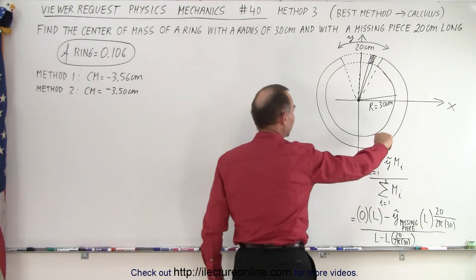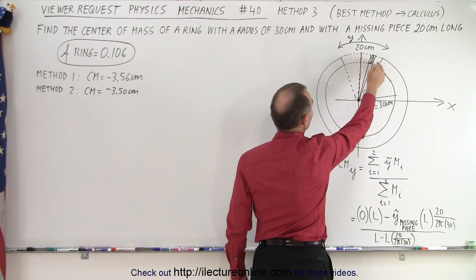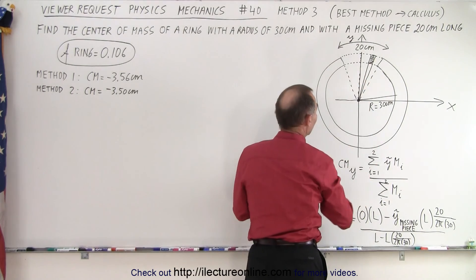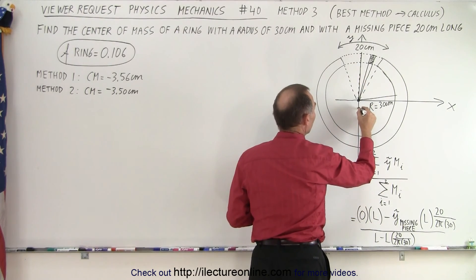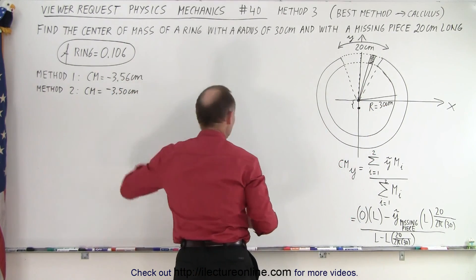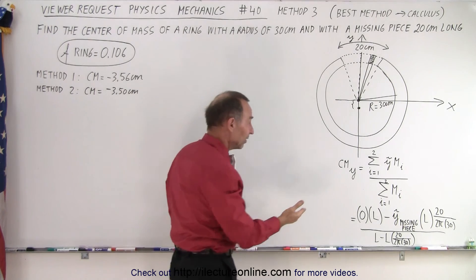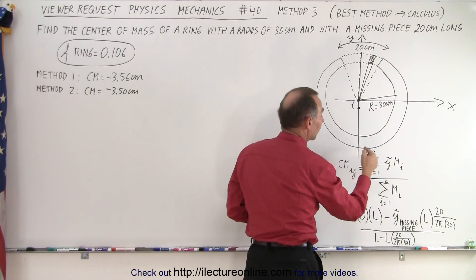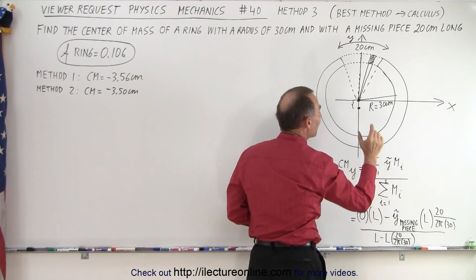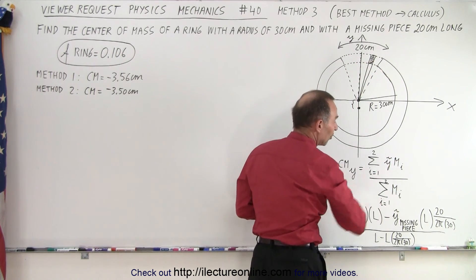Again, we start with an entire ring that has a radius of 30 centimeters, we cut out a piece, the length of the piece along the ring edge is 20 centimeters, and we're supposed to find the center of mass. Because the missing piece is there, the center mass will be somewhere below the origin of the x-y axis. The question is how much below. We still use the same technique to find the center mass in the y direction: it is the sum of the product of the center mass of the whole ring times the mass of the ring minus the center mass of the missing piece times the mass of the missing piece, divided by the sum of the two masses.